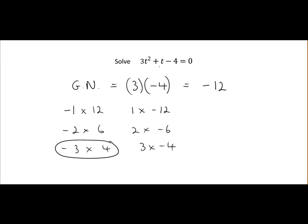So how we use these is we rewrite our equation using that information. So 3t squared stays the same. Plus t will change to minus 3t plus 4t. So we are using the numbers gained from the last step. And our constant stays the same minus 4. It's all equal to 0.